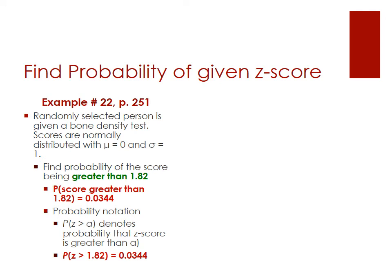Make sure you have all of this in your notes and understand how this computation works. Notice in the probability notation that the direction of the symbol has changed to greater than, because that's what we've been asked to solve for, and the Z-score has also changed for this particular problem.